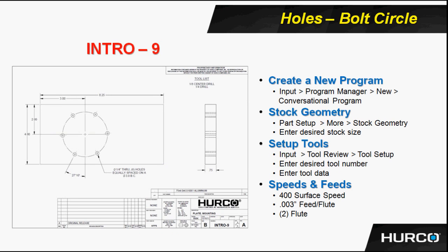This is the program that we're going to do next, and that's intro 9. In this print, we have two tools, an eighth-inch center drill and a quarter-inch drill. And we're just simply going to program a six-hole bolt circle using that 27-degree and 10-minute location for the bolt circle.